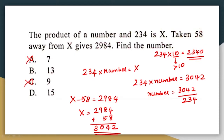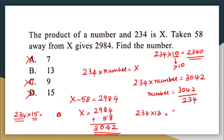We're left with options B and D. If option D were correct, 234 multiplied by 15 — the last digit of 5 times 4 is 20, so the answer would end in 0. But our target 3,042 ends in 2, so 15 is not the answer. Checking 13: 234 multiplied by 13 equals 3,042. So the correct answer is option B, 13.